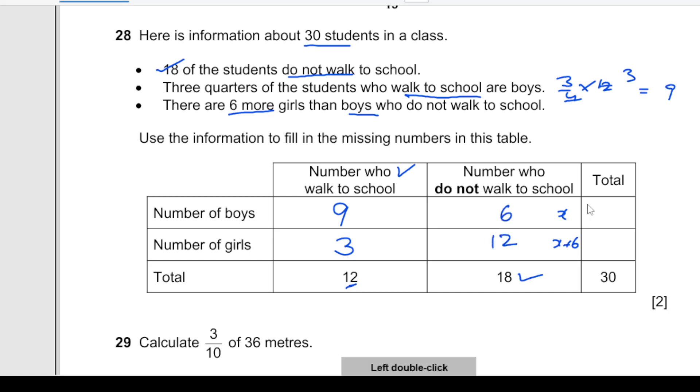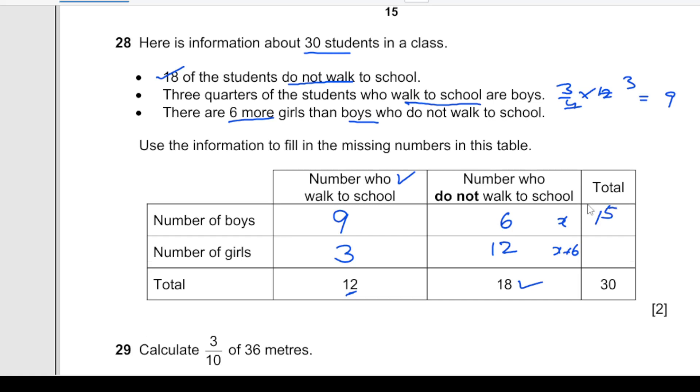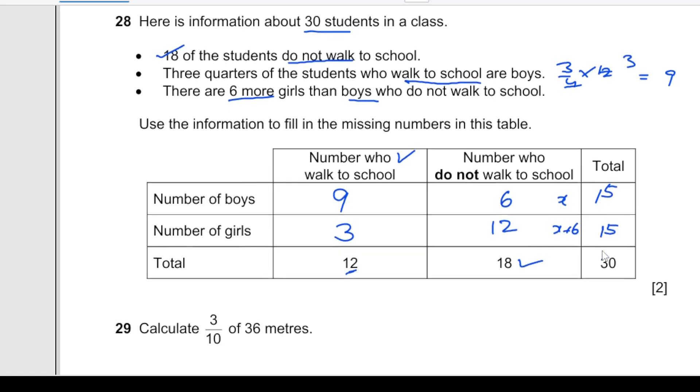We're just going to add: 9 plus 6, the total will be 15. And here we have 12 plus 3, again it is 15. That is how you complete the table.